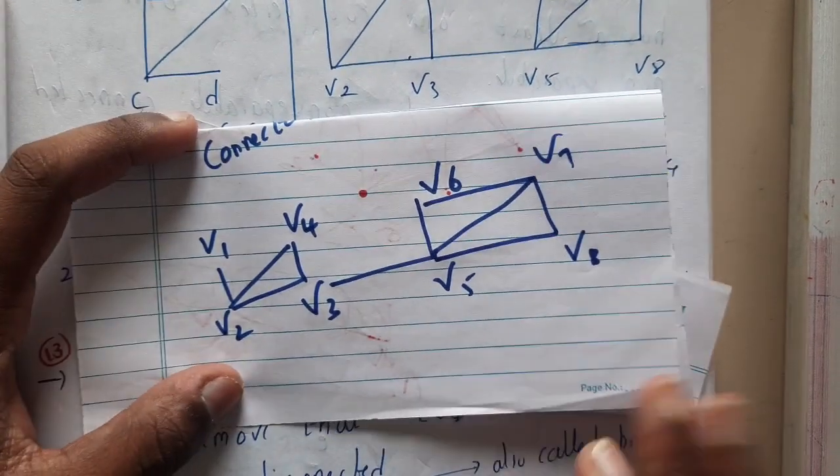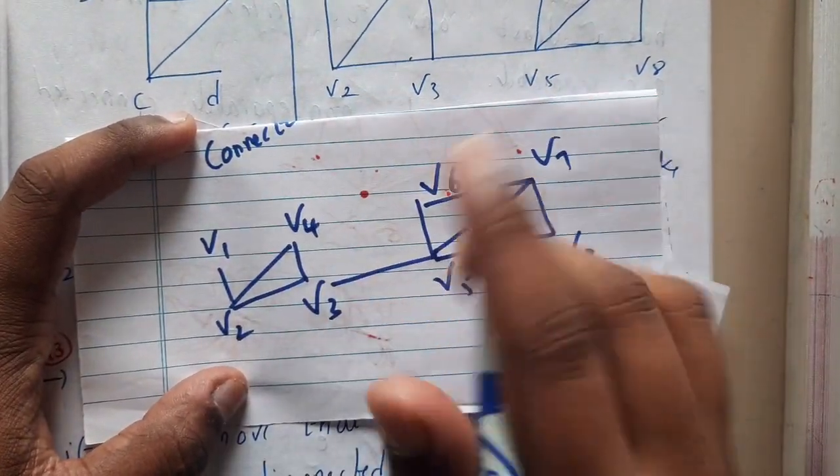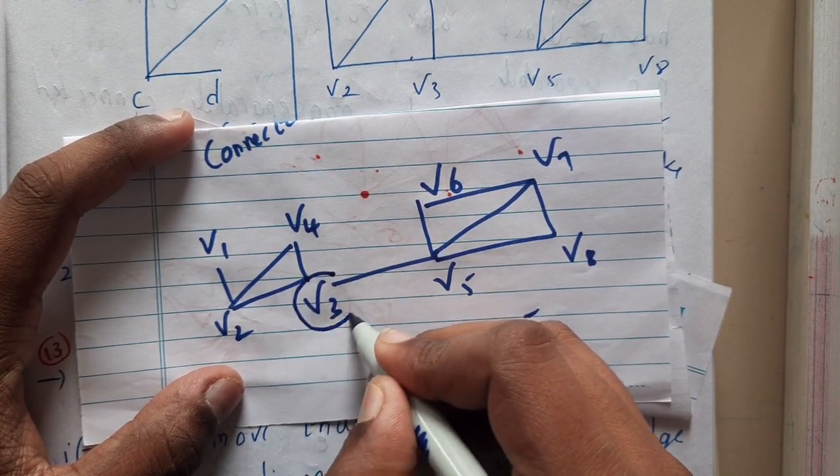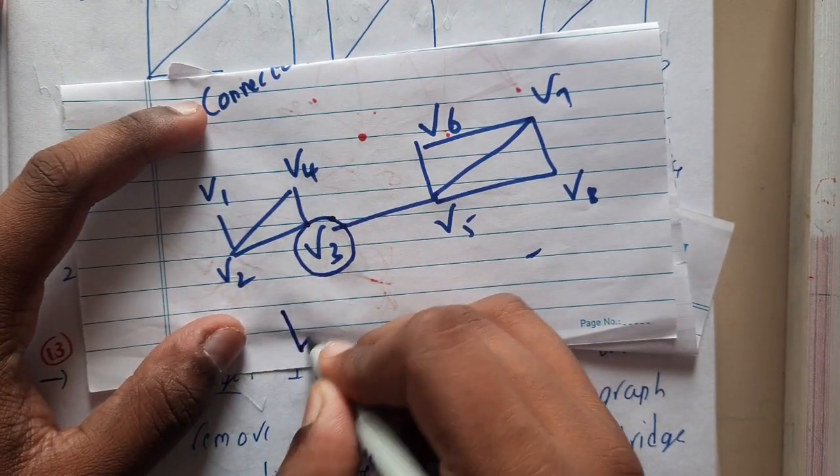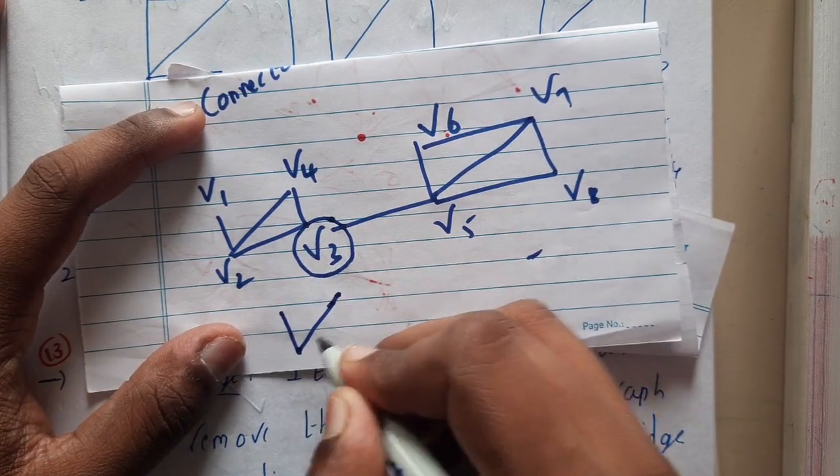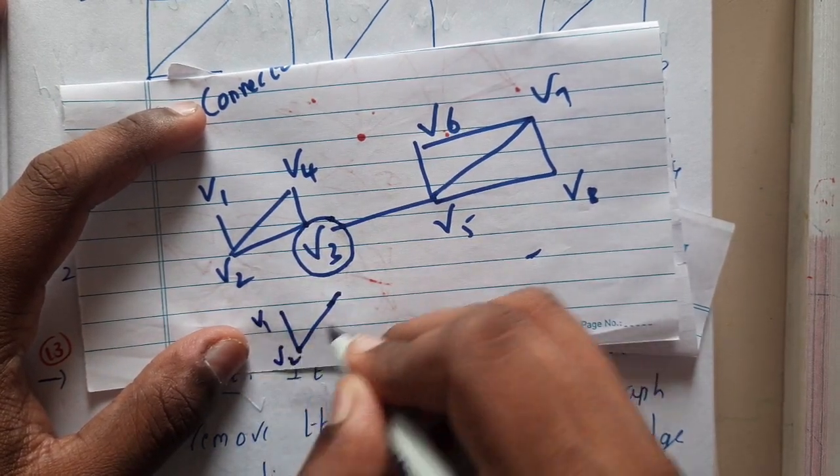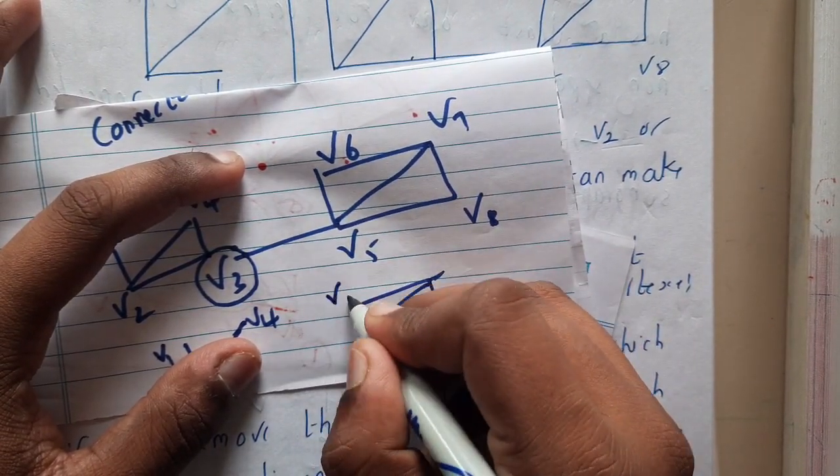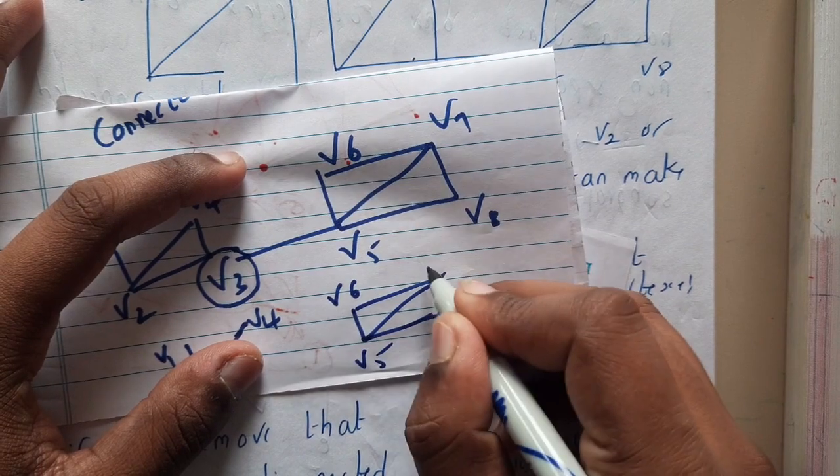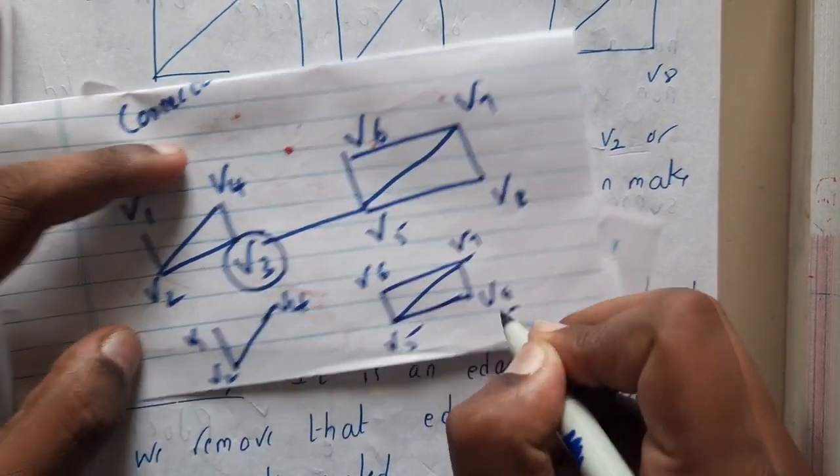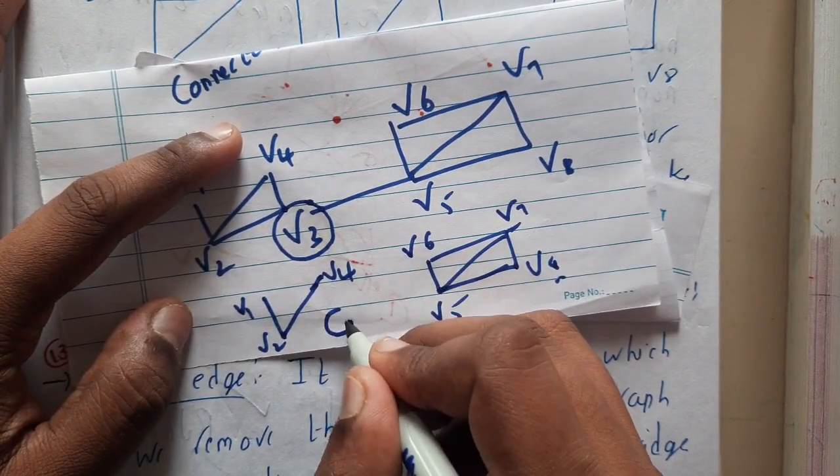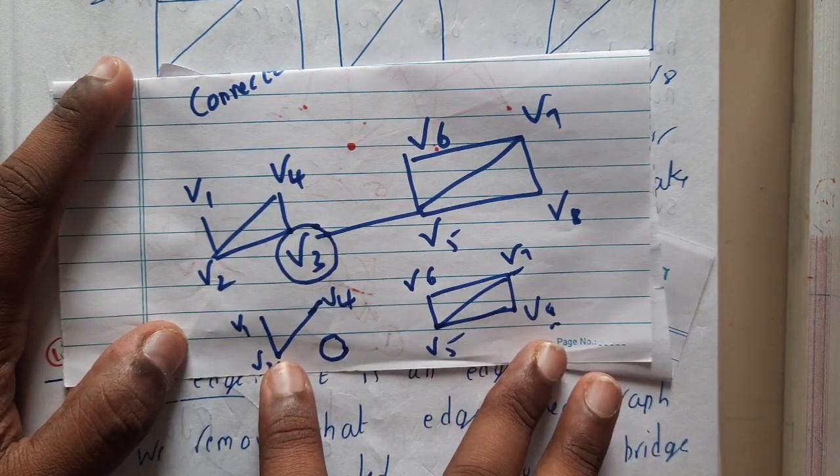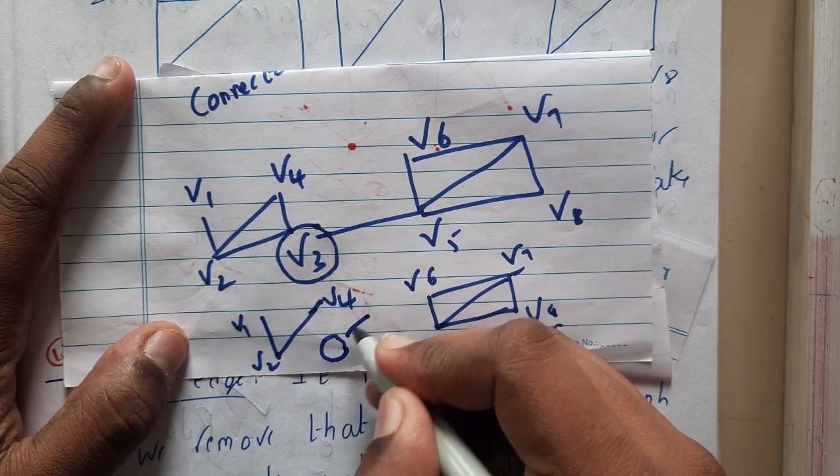So this is the graph which I have drawn. By removing the particular vertex, assume that I removed this vertex - what will be the result? We discussed about removal of vertices right. So it will be v1, v2, and v4. Similarly here, the shape will not change because it will not affect this part: v7, v8. So after removal of this particular vertex, a connected graph has converted into disconnected graph. Hence this vertex is called as a cut vertex.